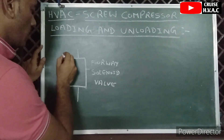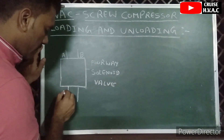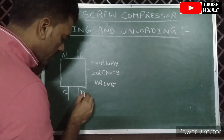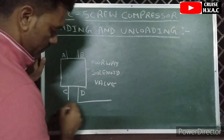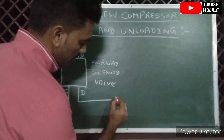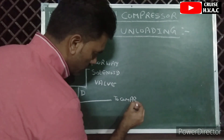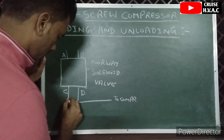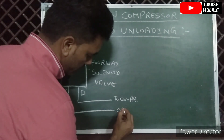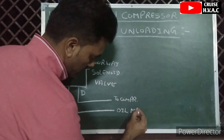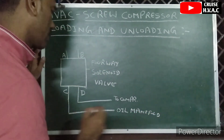On the four-way solenoid valve, we have four points: point A, point B, point C, and point D. Point D is going to the compressor, and point C is coming from the oil manifold.